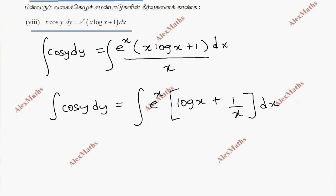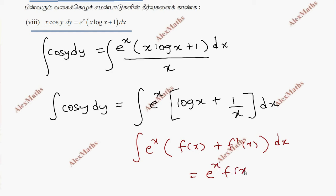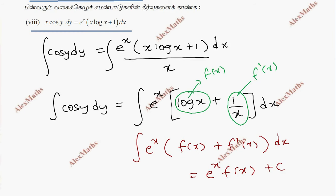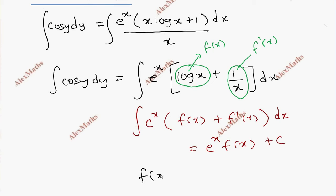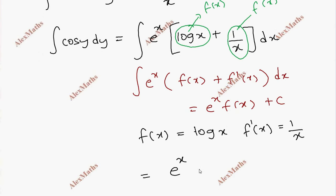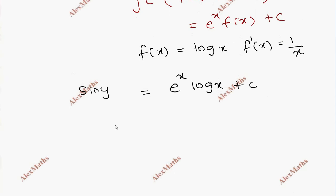This integration uses the standard form: integral of e^x [f(x) + f'(x)] dx = e^x·f(x) + C. Here f(x) is equal to log x, and f'(x) is equal to 1/x. So the answer is e^x·log x + C. Since the integral of cos y is sin y, the total solution is: sin y = e^x·log x + C. This is the solution.